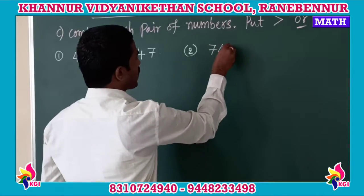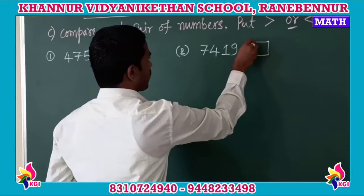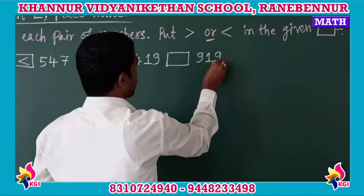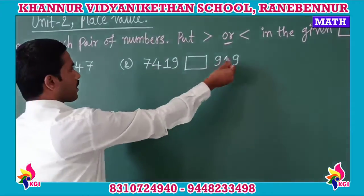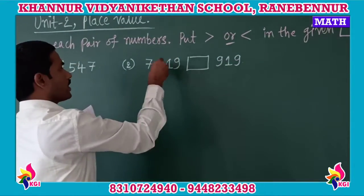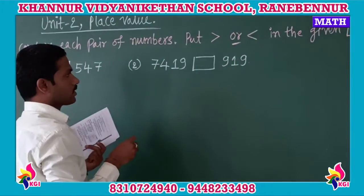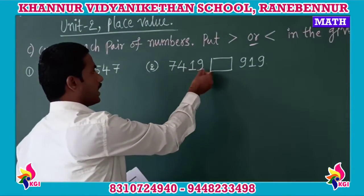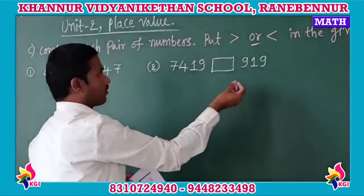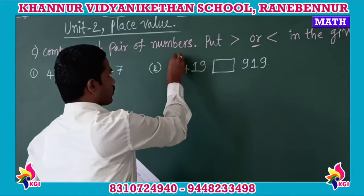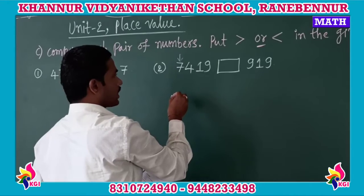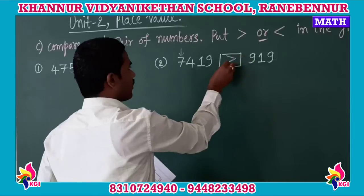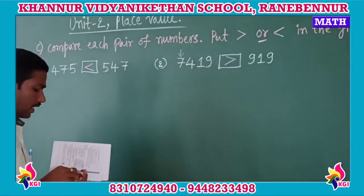The second pair is 7,419 and 919. When the number of digits is different, the number with more digits is greater. 7 is in the thousands place in 7,419, so 7,419 is greater than 919.